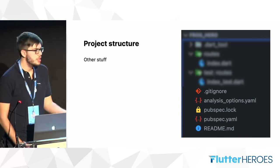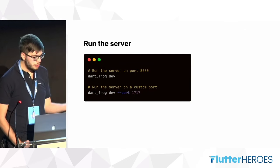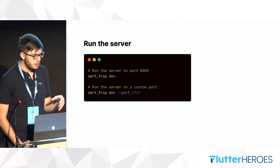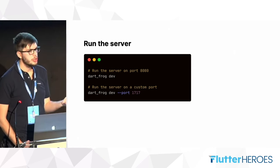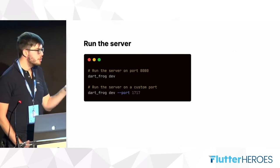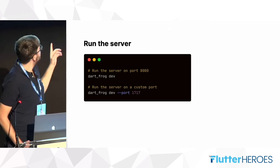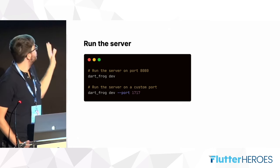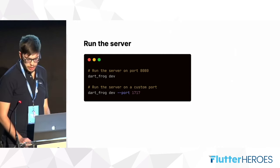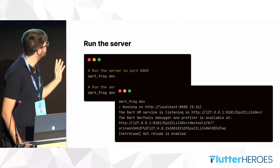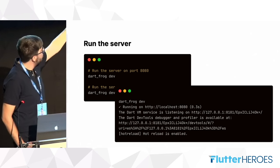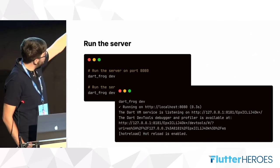We can now start the server using the dart frog dev command. This command will run the server on the default port, which is 8080. If you want to specify a different port, you can use the --port parameter and insert a port you prefer. The output in the terminal will show the server running on localhost at port 8080.